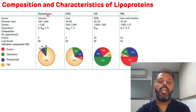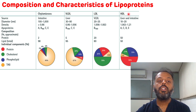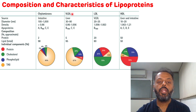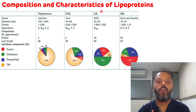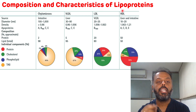The source of chylomicron is the intestine. The source of very low density lipoprotein is the liver. The source of low density lipoprotein — it is formed from very low density lipoprotein. And high density lipoprotein is formed from the liver and intestine.